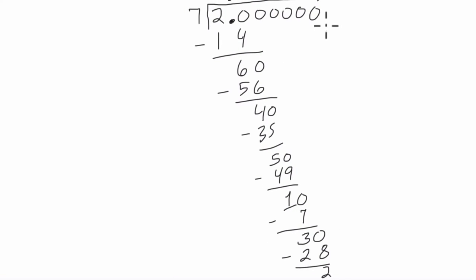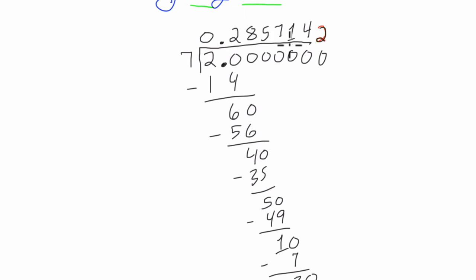So again, 7 doesn't go into 2. We're thinking of going into 20, and it goes into it twice. And already, what's starting to happen is we're getting a repeating pattern. See this 2 repeating here.